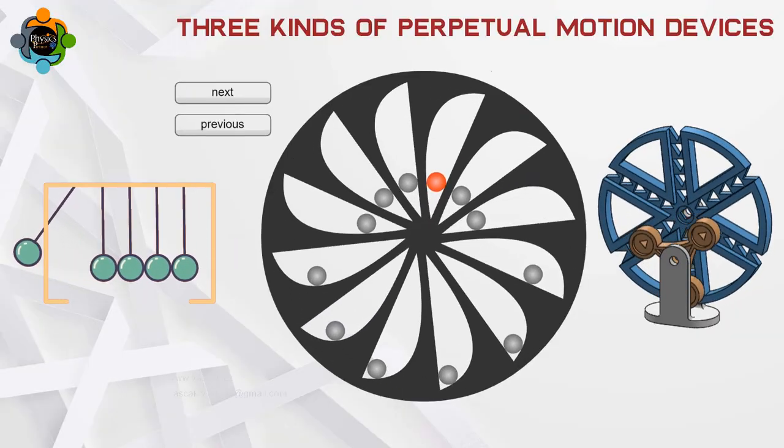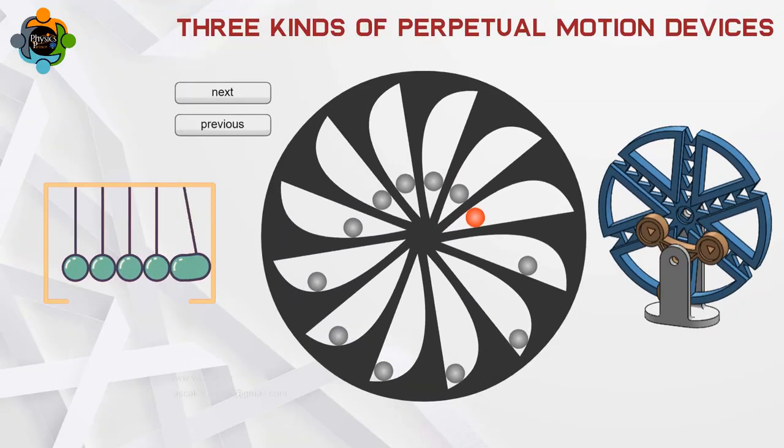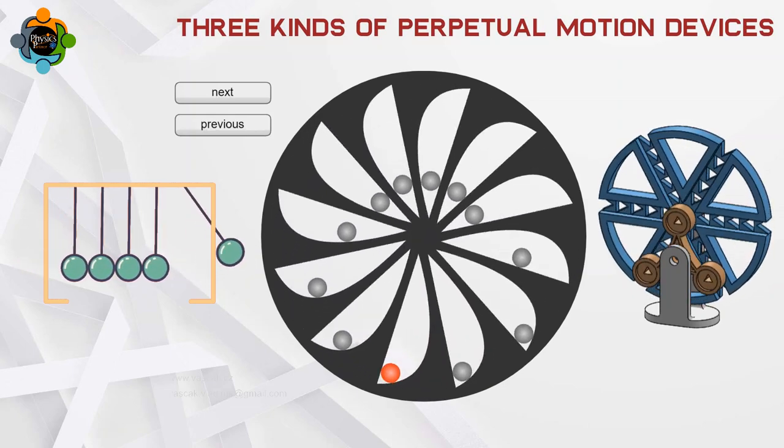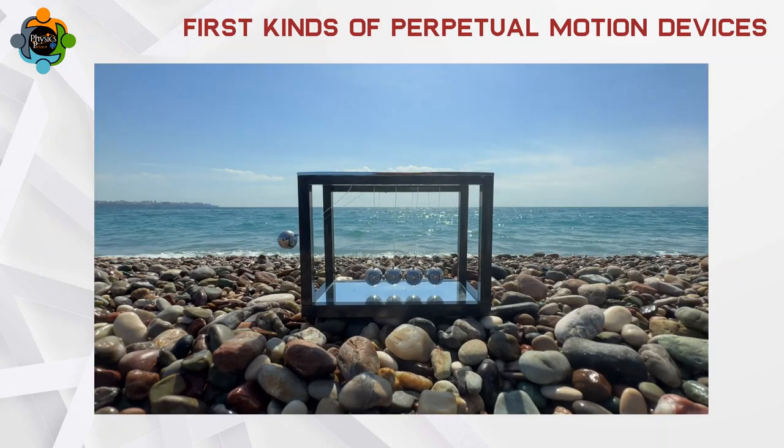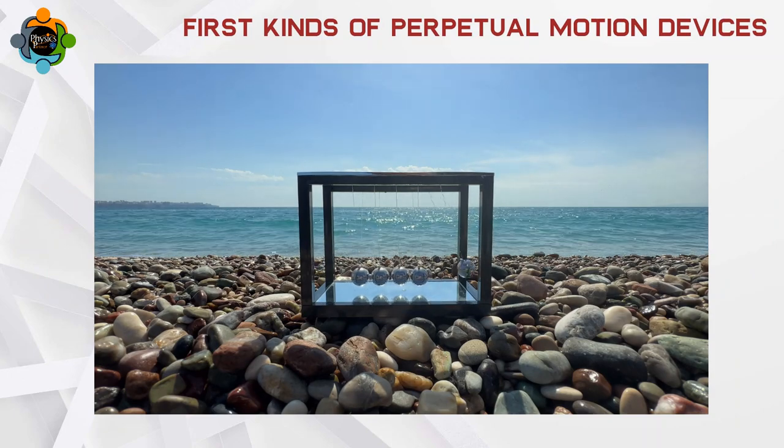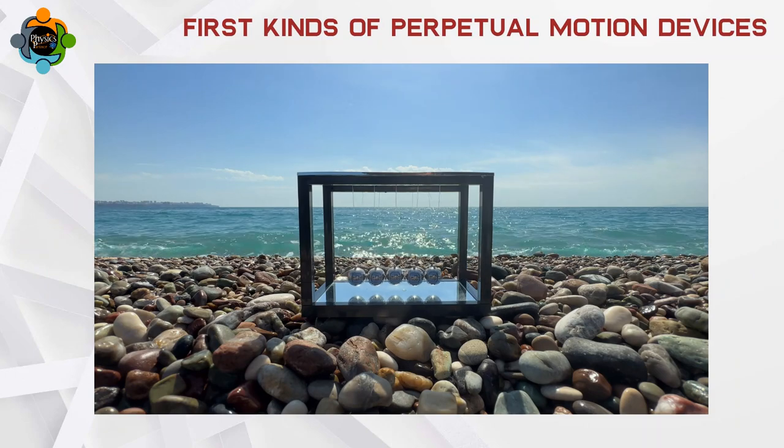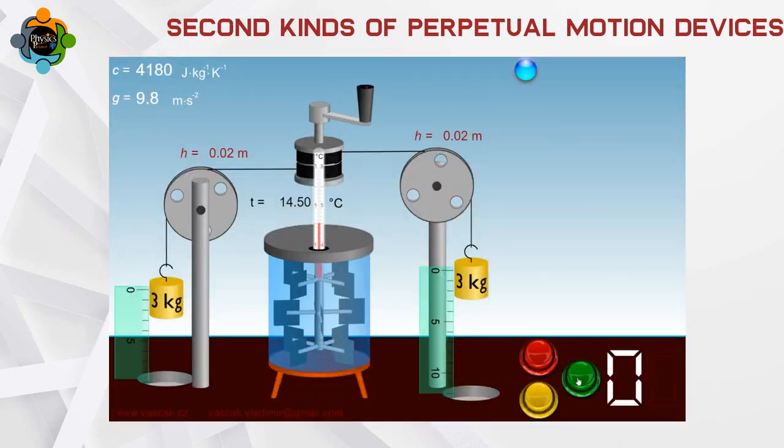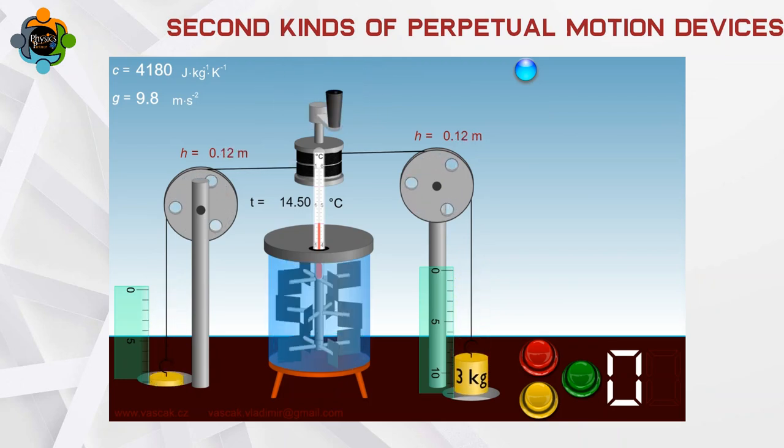The three kinds of perpetual motion devices can be categorized based on the laws of thermodynamics they attempt to violate. A perpetual motion machine of the first kind produces work without the input of energy. It thus violates the first law of thermodynamics, the law of conservation of energy.